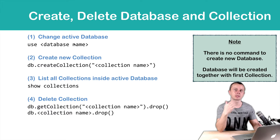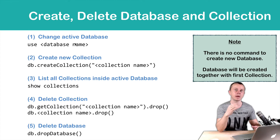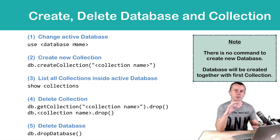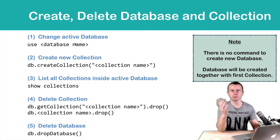Finally, there is a command to drop a database. Just type DB dot dropDatabase with empty parentheses. This command does not accept any arguments — it will simply drop the active database. These commands are used to create and drop collections and databases in the MongoDB shell. In graphical interfaces, everything is much easier and you can perform these tasks in a couple of button clicks. Let's switch to MongoDB shell and create new databases and collections there.